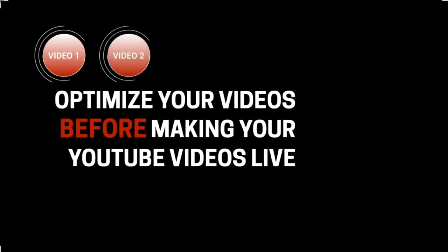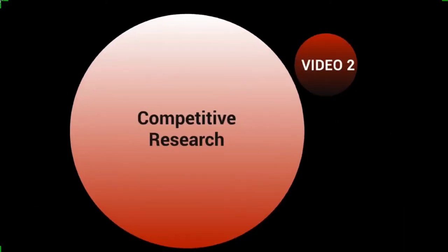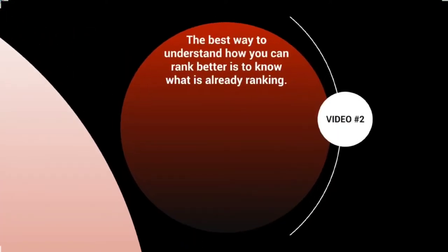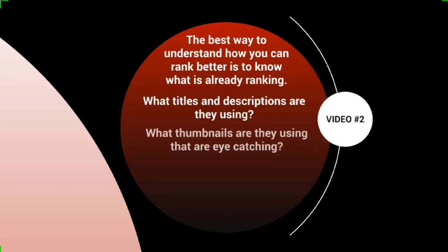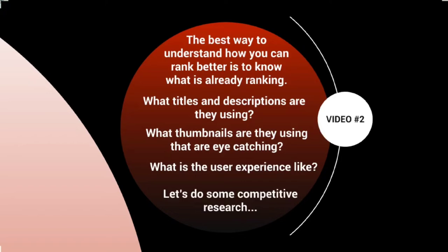Hello and welcome back, this is video number two. Let's talk about competitive research. The best way to understand how you can rank better is to know what is already ranking in your niche or market. We want to analyze the videos that are on top, specifically looking at what titles, what descriptions, and what thumbnails they're using that are eye-catching — and what the user experience is like when you click through those videos.